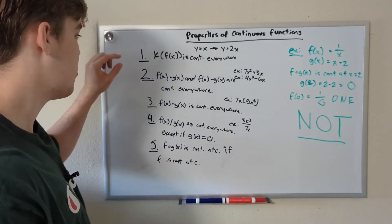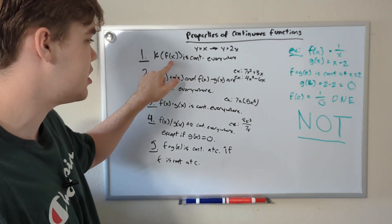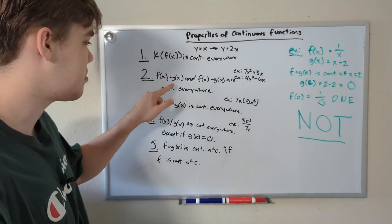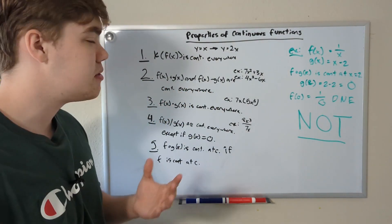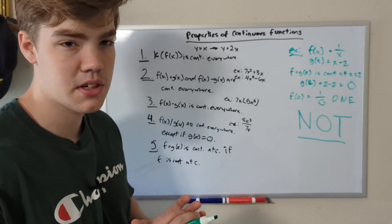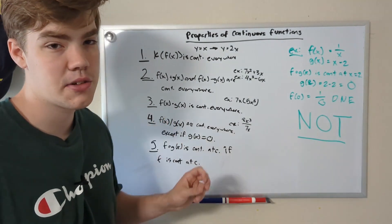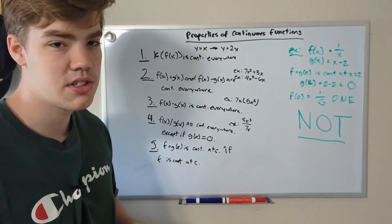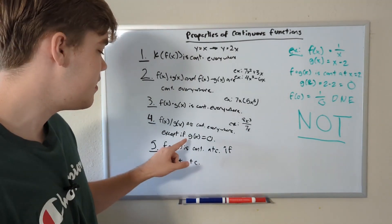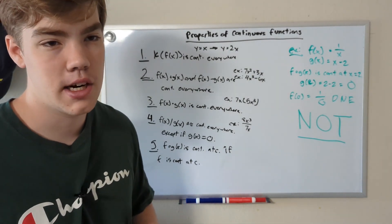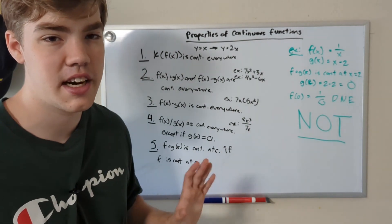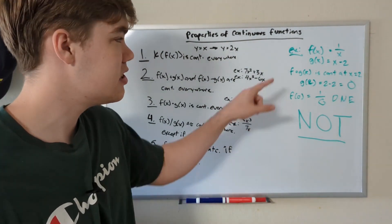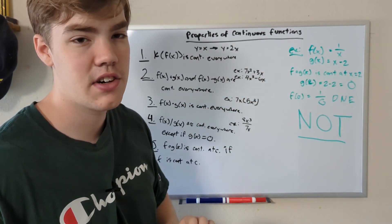To review: Number one, k·f(x) is continuous everywhere — adding a scalar doesn't change continuity. Number two, f(x) ± g(x) are continuous everywhere. Number three, f(x)·g(x) is also continuous everywhere. Number four, f(x)/g(x) is continuous everywhere as long as g(x) ≠ 0. Number five, f(g(x)) is continuous at a point c if f is continuous at c — meaning f(x) must exist wherever we plug in our x to g(x).